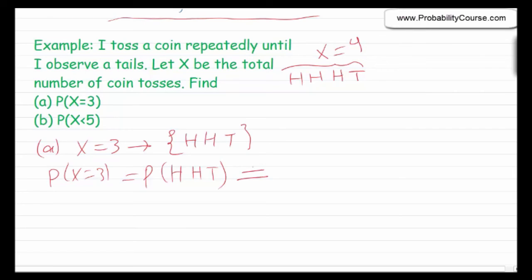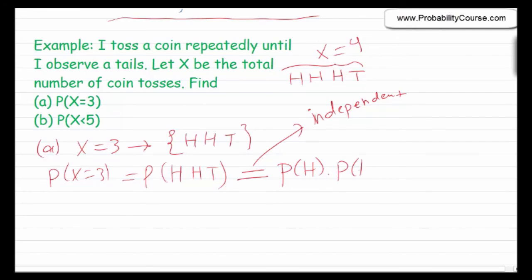Because we assume coin tosses are independent, and the coin is fair, this equals probability of heads times probability of heads times probability of tails, which is one-half times one-half times one-half, giving probability one over eight.